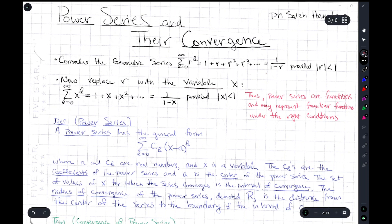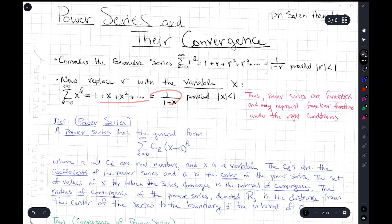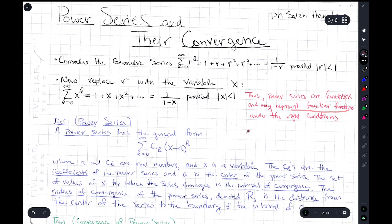Consider the following geometric series. We've looked at this before, and we know that if the absolute value of r is strictly less than 1, this geometric series will converge to 1 over 1 minus r. Now let's replace r with the variable x. When we do that, this becomes a function. We're saying that provided the absolute value of x is strictly less than 1, this infinite sum involving a variable is equal to 1 over 1 minus x. We can represent this function with that infinite series.